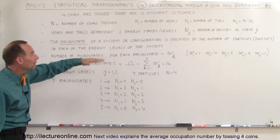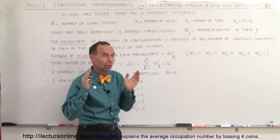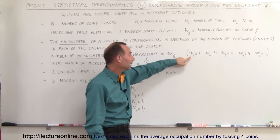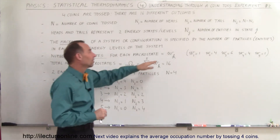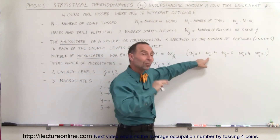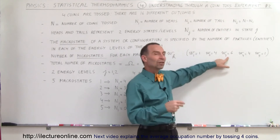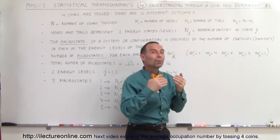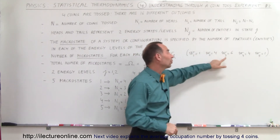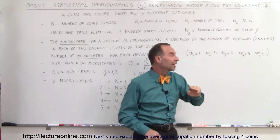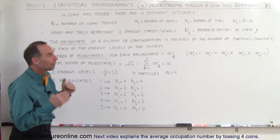The number of microstates for each macro state is defined as w sub k. There was only one way four coins could all be heads, so w sub 1 equals one. When we had w sub 2 — three heads and one tail — there were four arrangements, so four microstates. Two heads and two tails was the most probable macro state, with six microstates. One head and three tails had four microstates, and all four tails had only one microstate.